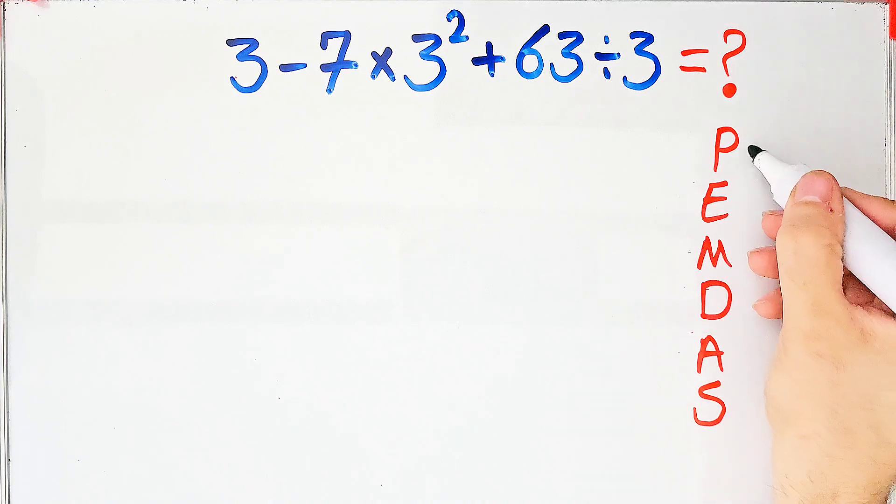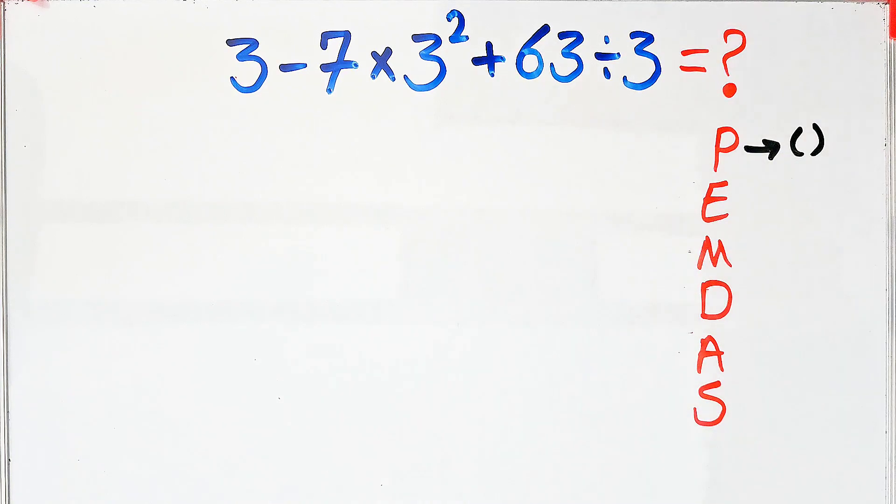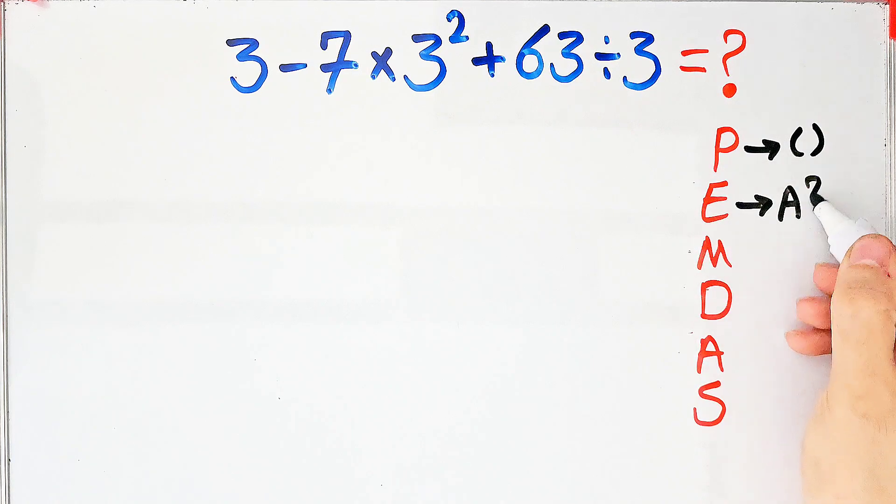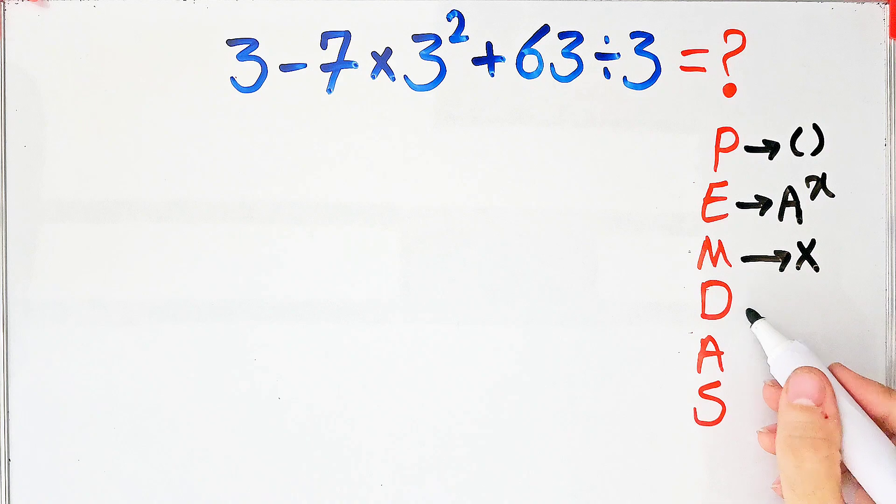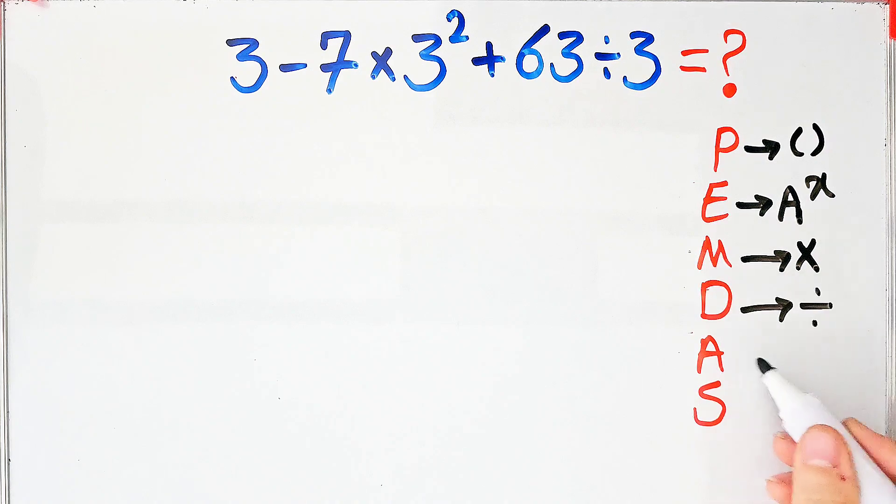In this rule, P stands for parentheses, E stands for exponent, M stands for multiplication, D stands for division, A stands for addition, and S stands for subtraction.